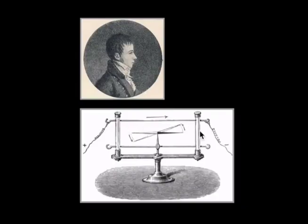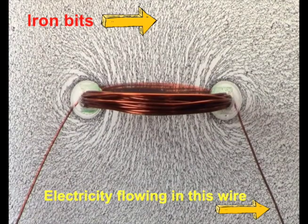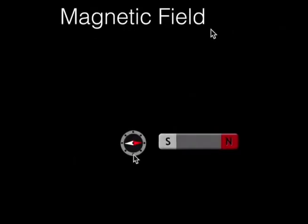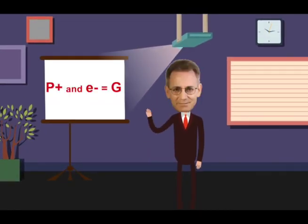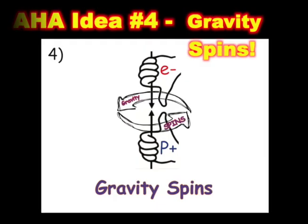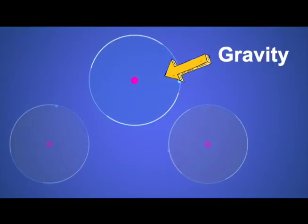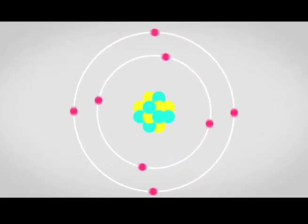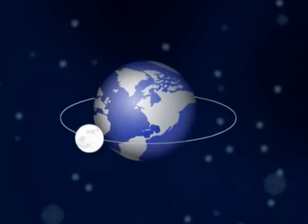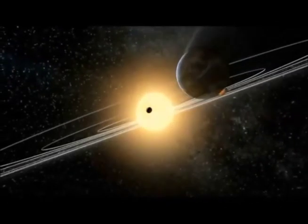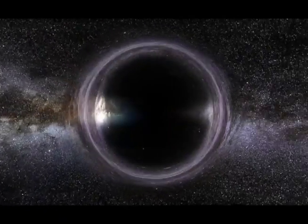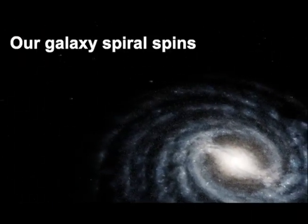What does this have to do with gravity? When electricity flows in a wire, with iron bits we can see a right-angle field. The old theory is that this is a magnetic field. A new aha idea is that magnetism is really gravity. The positive proton and negative electron pull together — this attraction is gravity. Gravity is a circle-shaped field around neutrons, which is why electrons spin around the nucleus, why the moon orbits the Earth, why planets orbit our sun, and what if intense gravity from the black hole in the center of the Milky Way makes our galaxy's spiral spin?